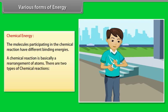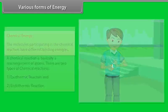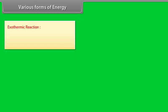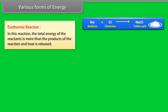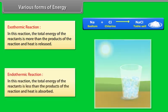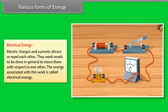Chemical energy. It arises from the fact that the molecules participating in the chemical reaction have different binding energies. A chemical reaction is basically a rearrangement of atoms. There are two types of chemical reactions: Number 1, exothermic reaction, and Number 2, endothermic reaction. Exothermic reaction: In this reaction, the total energy of the reactants is more than the product of the reaction and heat is released. Endothermic reaction: In this reaction, the total energy of the reactants is less than the product of the reaction and heat is absorbed.